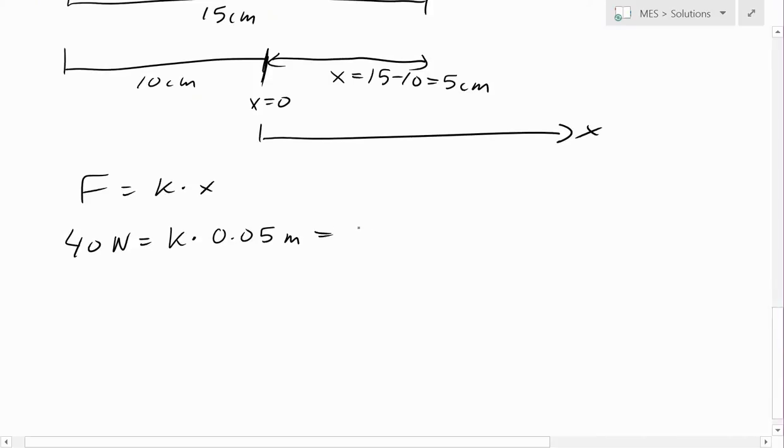So k equals 5 over 100 in units of meters. This is just to make it easier to calculate what k is. When we solve for k, just rearrange this. We'll get 40 times 100, move it over, divide it by 5. The units are going to be 1 over meter with newton on top.